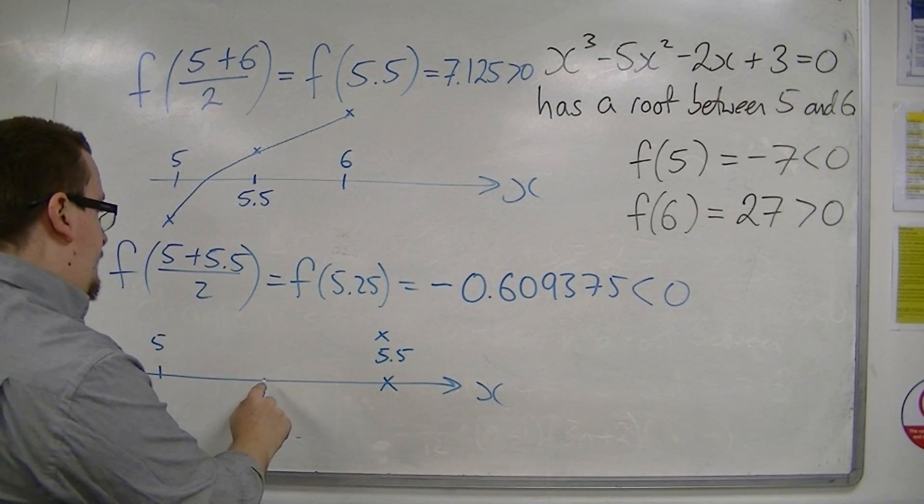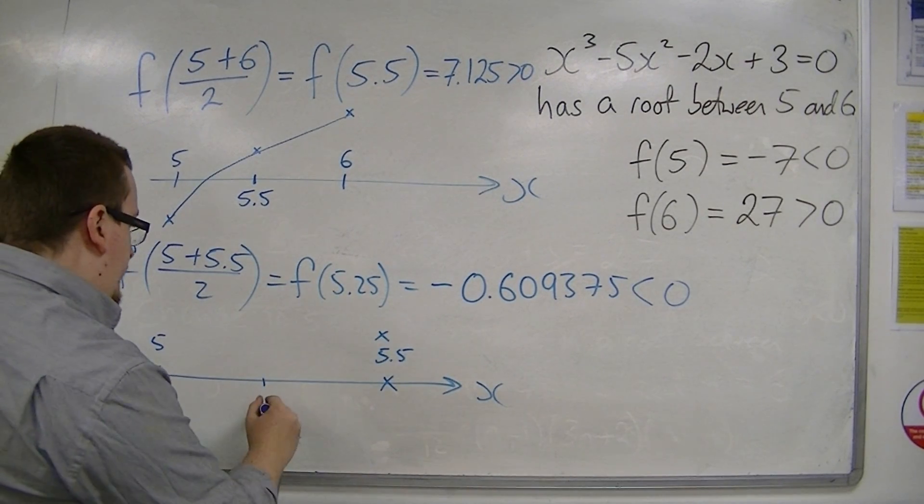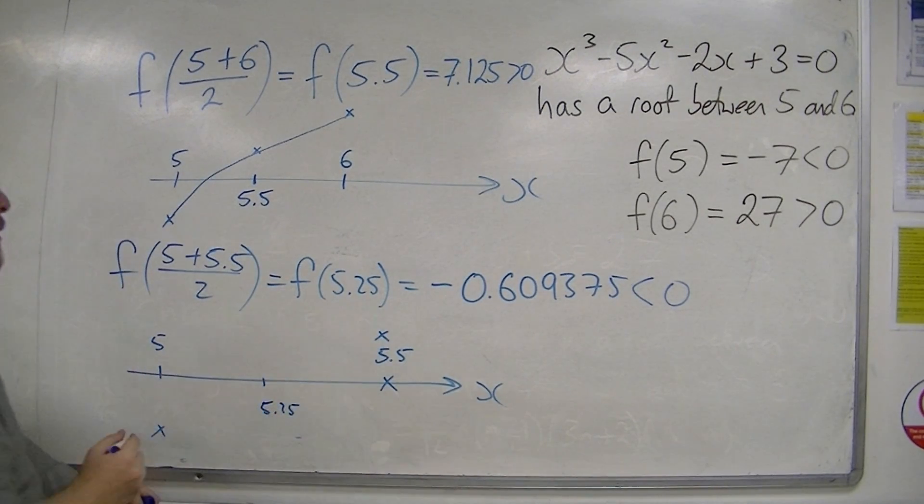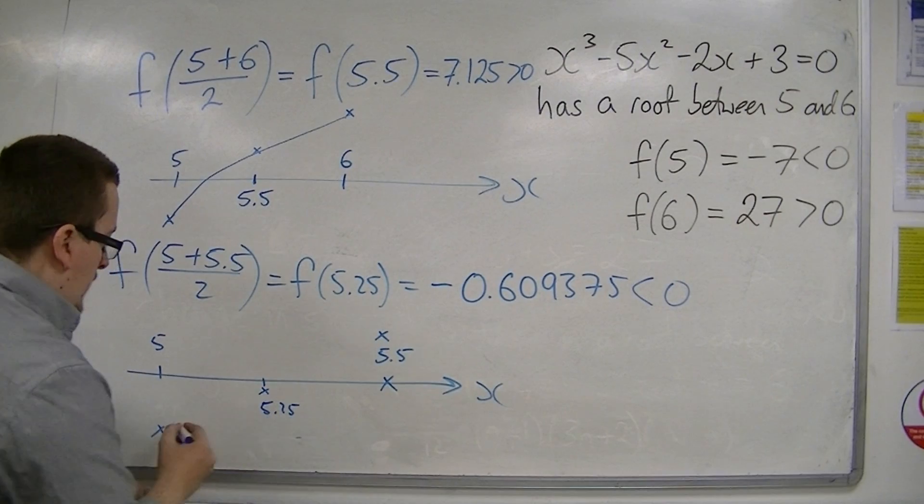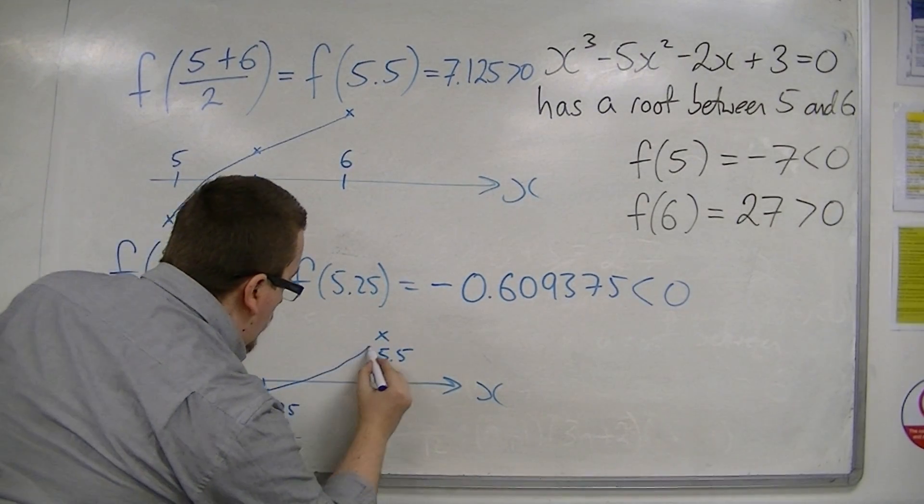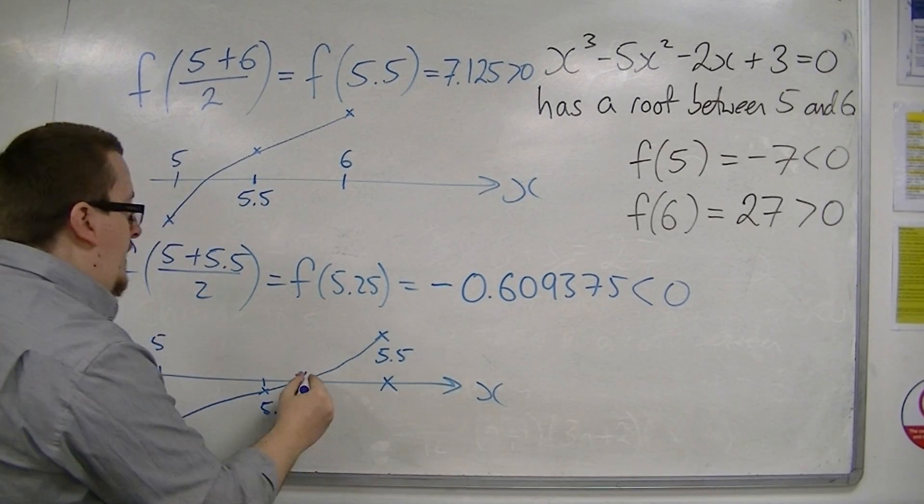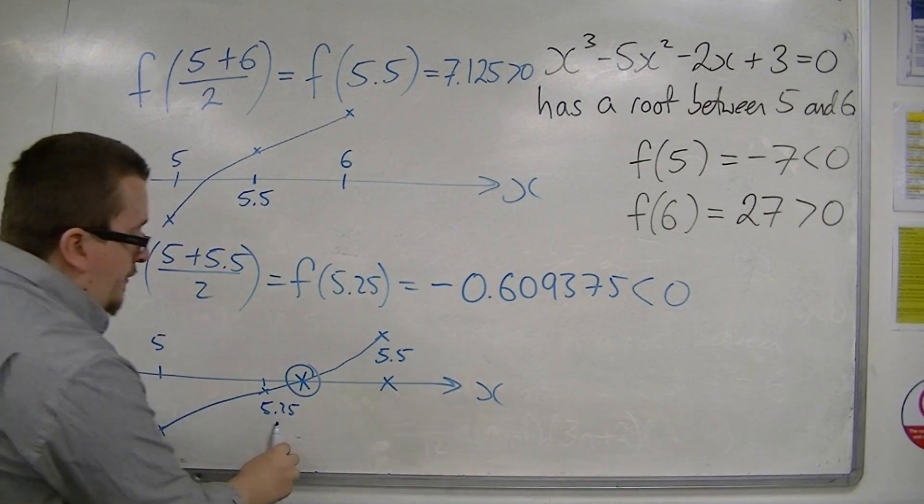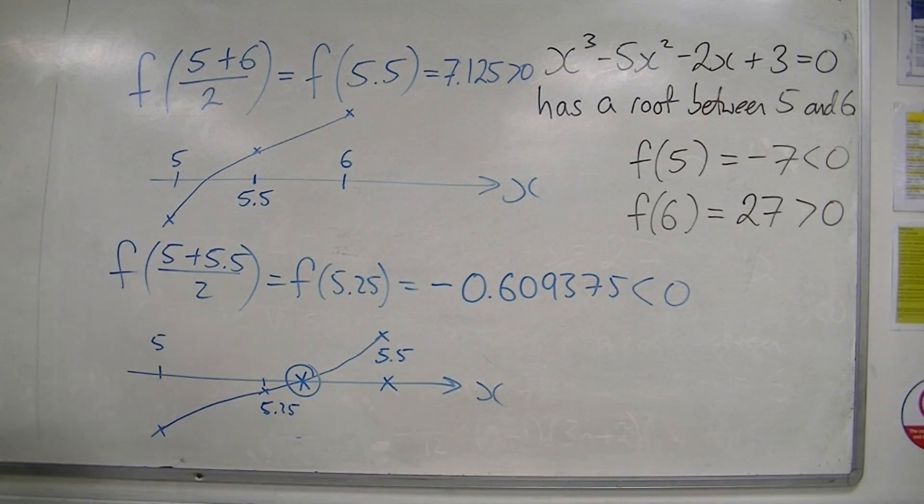and now I've looked at 5.25, which was negative. So that means that the curve must cross the x-axis somewhere between 5.25 and 5.5.